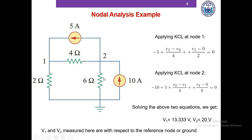You are free to take any one of the nodes as your reference node or ground. If you take a different node as ground, the answer will be different — that's another point to remember. Once you know the node voltages of a circuit, you can determine the current in any branch and the power of any element, so basically we have solved the circuit.